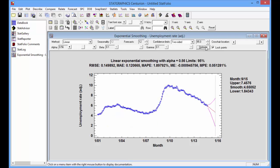I'll push the optimize button to determine the optimal value of alpha, which is around 0.56. Notice that the MAPE is less than it was for simple exponential smoothing.